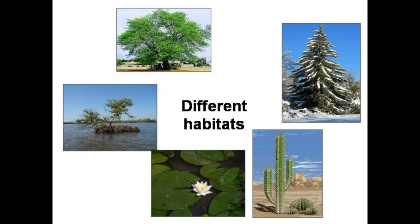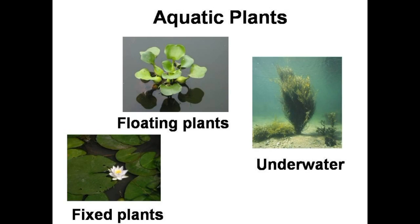The natural environment or surrounding where a plant lives is called its habitat. Water plants live in an aquatic habitat. There are three kinds of aquatic plants: floating plants, fixed plants, and submerged plants.